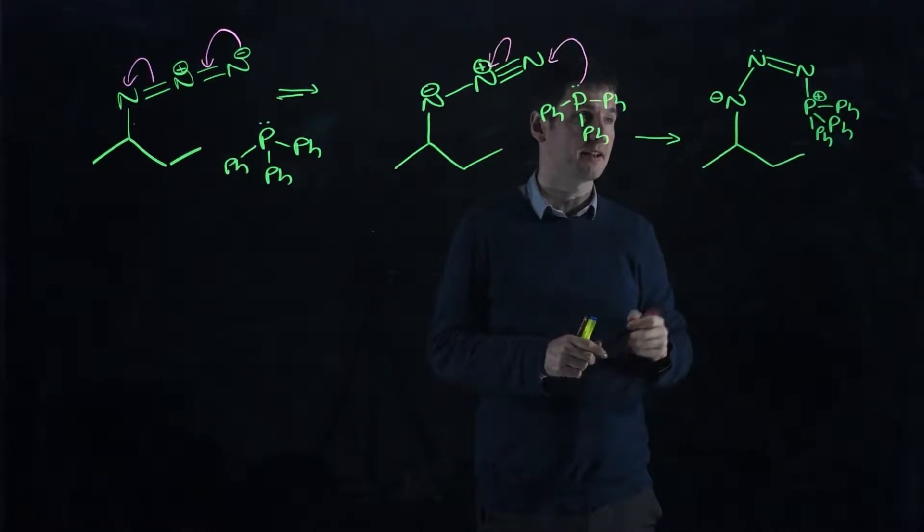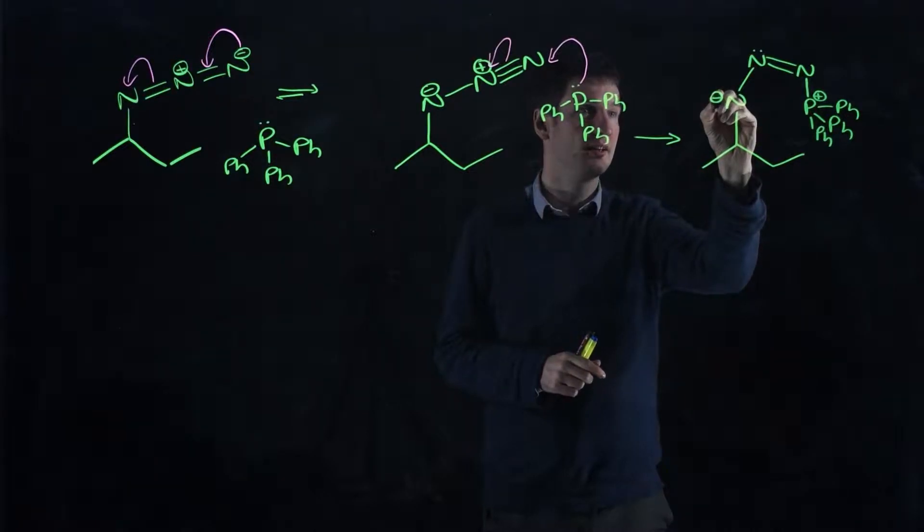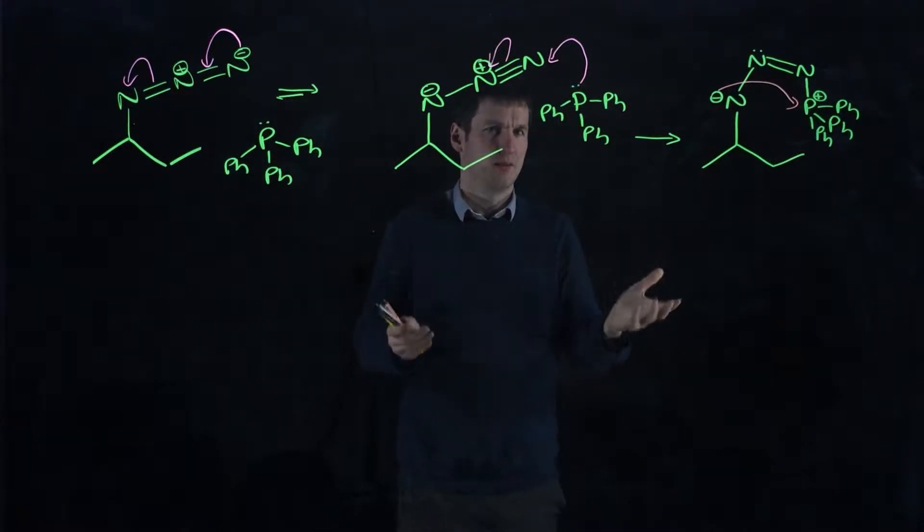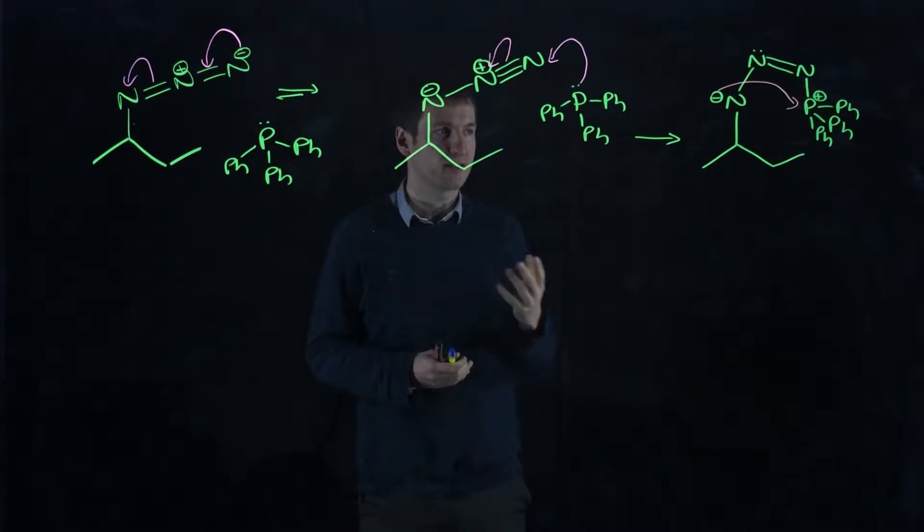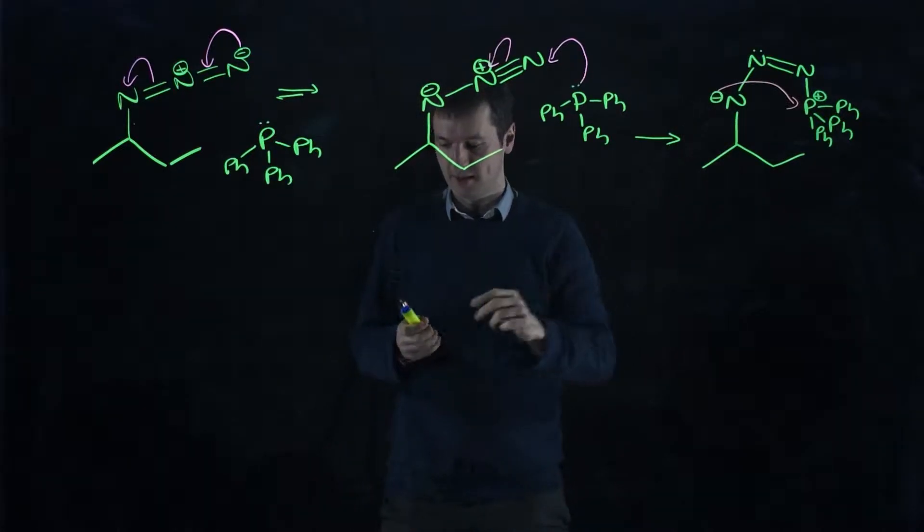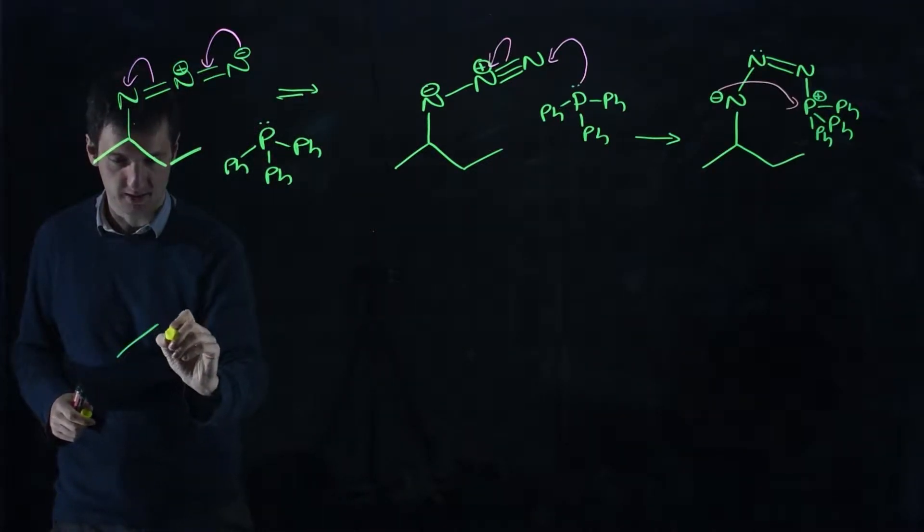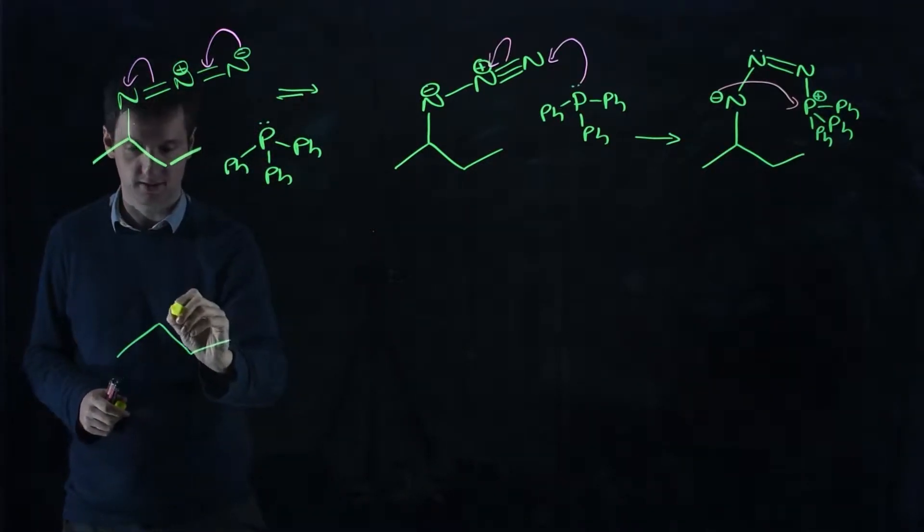So exactly what you might expect to happen can happen. This can attack and form a new nitrogen-phosphorus bond. But you're going to look at that and say, well, that's a four-membered ring. Let's see what it looks like once it's made. And you're going to notice that that's probably not a very stable intermediate.